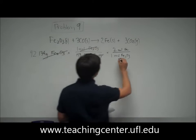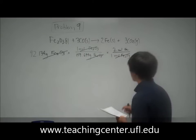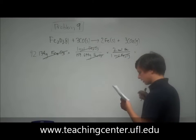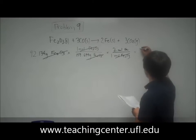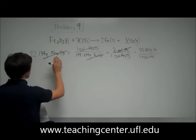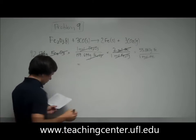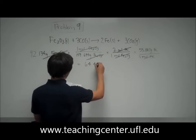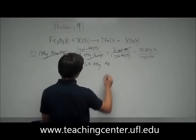So those cross out. And then lastly, you're going to put this into grams of iron. So the molar mass of iron is 55.847 grams of iron per one mole of iron. So the moles of iron cancel out. So from 92.143 grams of Fe2O3, you end up with 64.44 grams of iron.